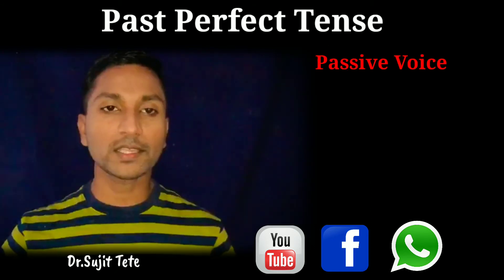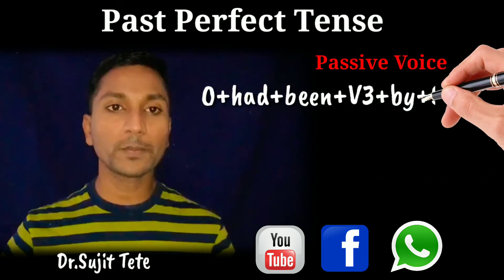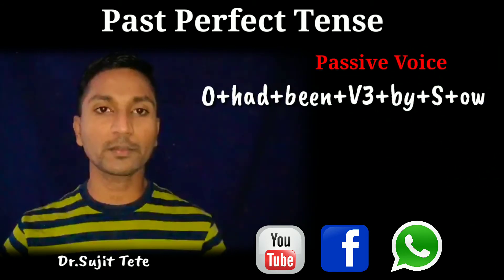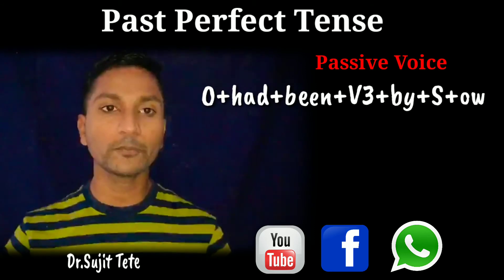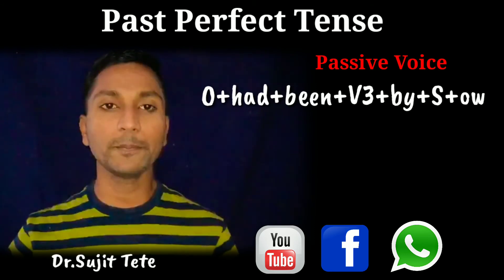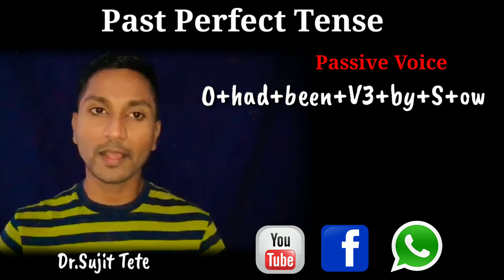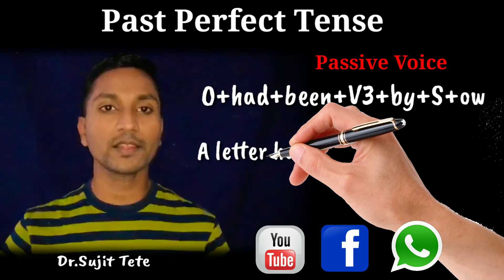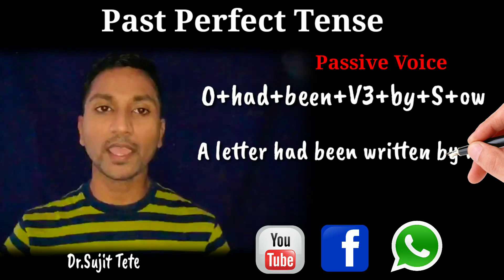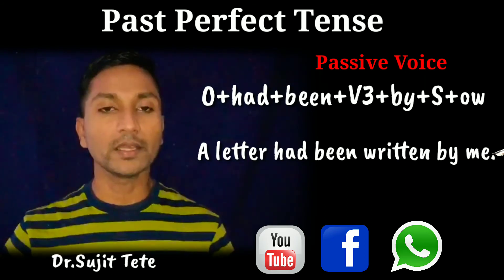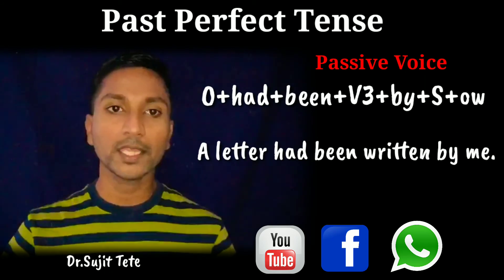The passive structure is: object plus had plus been plus V3 plus by plus subject plus other words. The example is: a letter had been written by me.